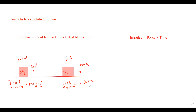The final momentum is 2 multiplied by 7, which equals 14 kilogram meters per second. When speeds are given, we find initial momentum, then final momentum, then calculate impulse as final minus initial: 14 minus 10 equals 4 kilogram meters per second.